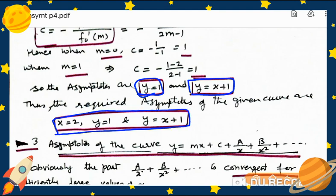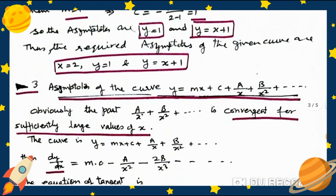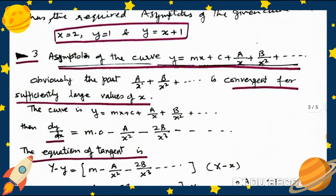So all three asymptotes of the curve are: x = 2, y = 1, and y = x + 1.